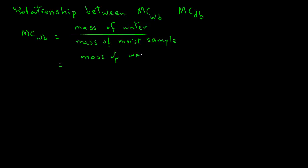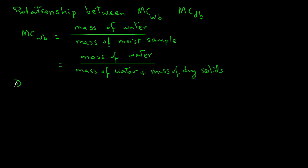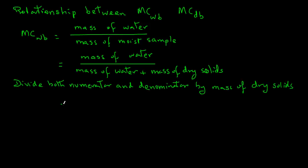But in the denominator, since the mass of moist sample is the mass of water plus the mass of dry solids. So if we now divide the numerator and the denominator by mass of dry solids, then moisture content wet basis will equal mass of water divided by mass of dry solids for the numerator.